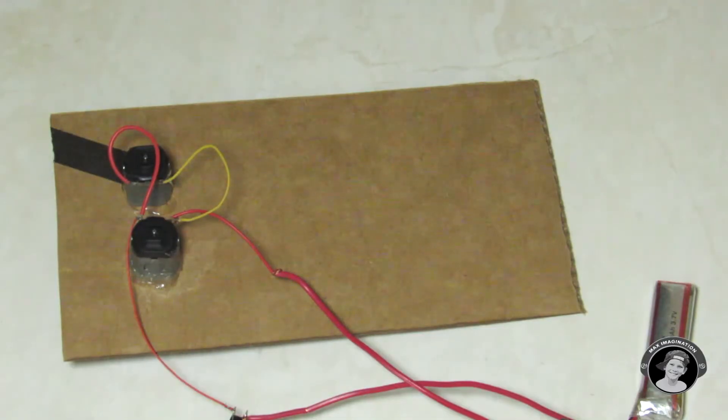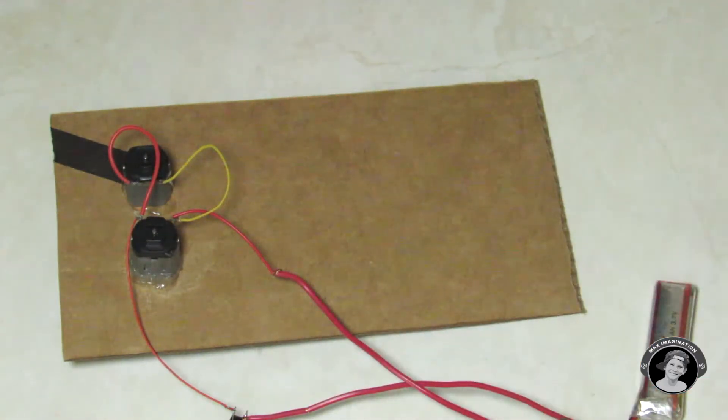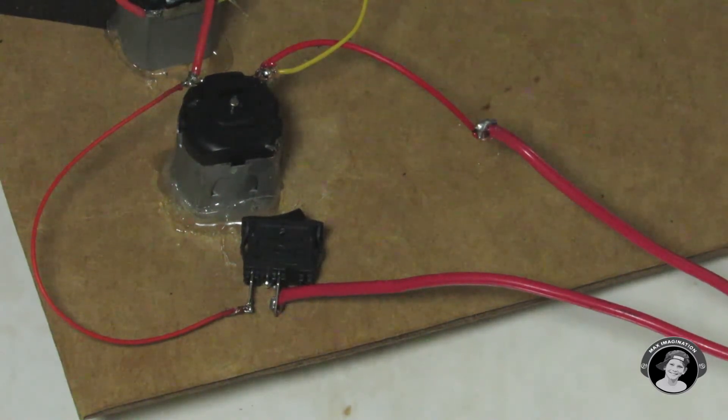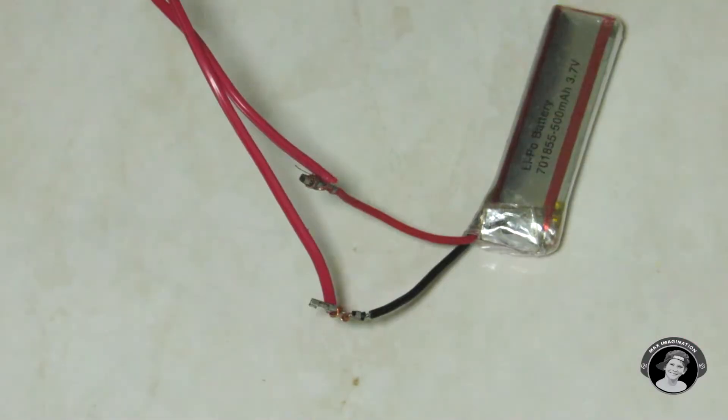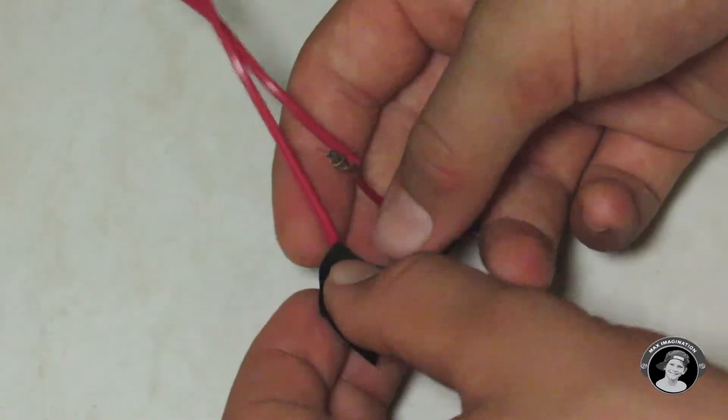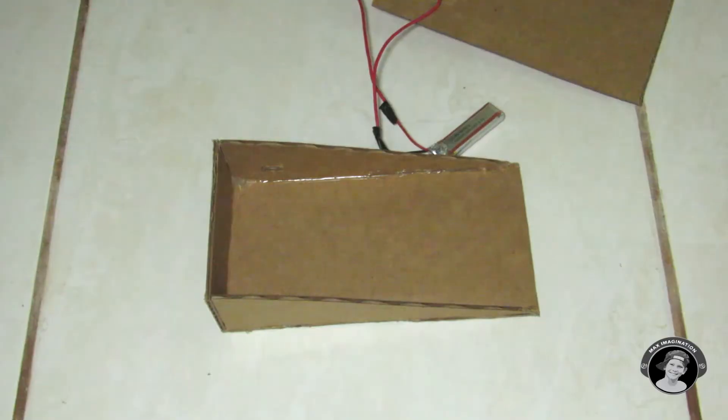Now you might want to take your soldering iron and soldering lead and solder all the joints that we just connected up. As you can see, I just finished soldering all the connections right here, and to prevent short circuits I do recommend wrapping them separately up in electrical tape.